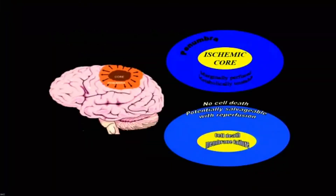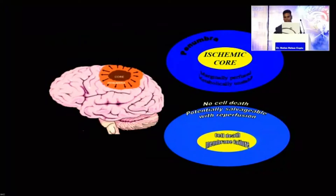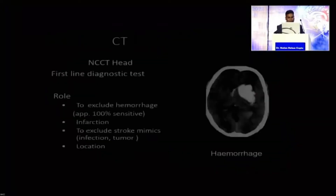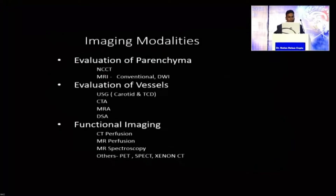Everybody knows that the yellow part is the ischemic core and we have to save the blue part — the penumbra. The imaging modalities include non-contrast CT (NC-CT), MRI; for the vessels: CT angio, MR angio, DSA, carotid Doppler, and perfusion images.